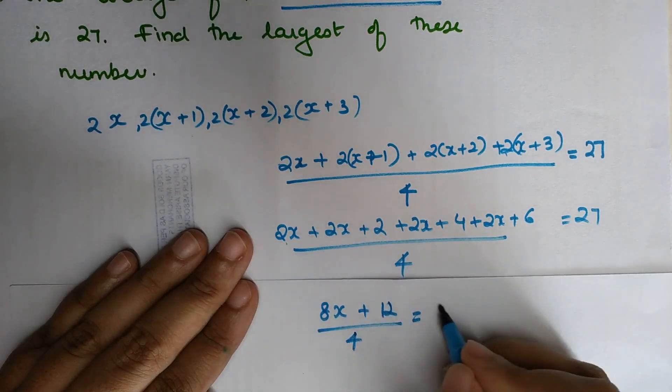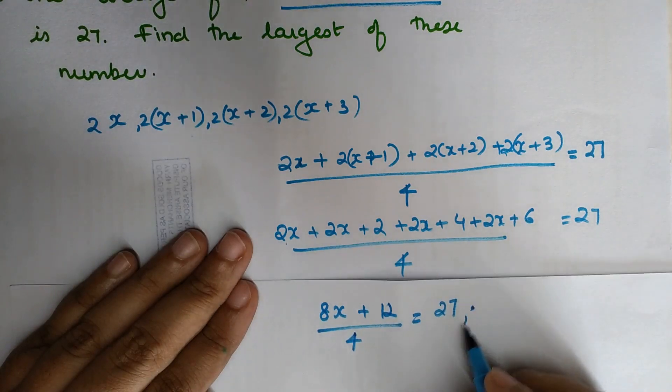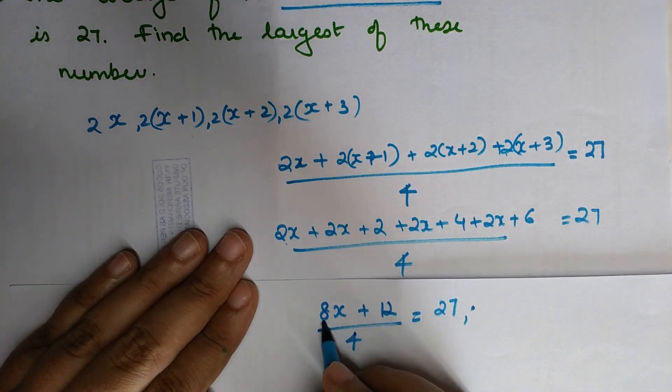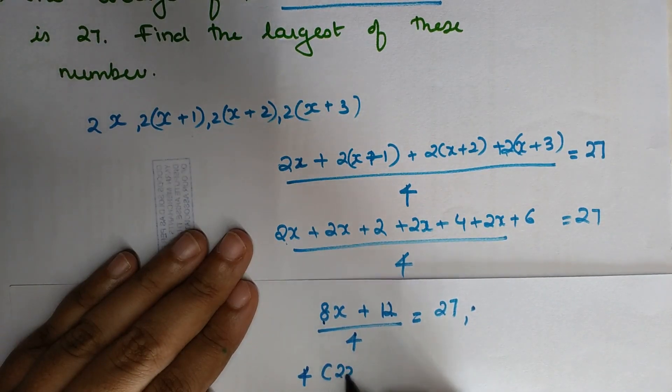Now we can say that 8x is also a multiple of 4, so let's take 4 outside. You have 2x+3 in the numerator divided by 4. This 4 and this 4 get cancelled, so it equals 27.